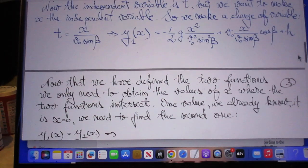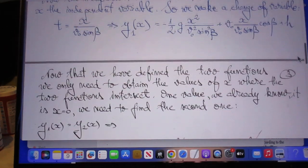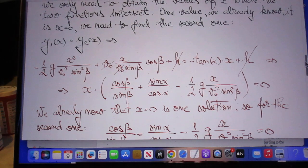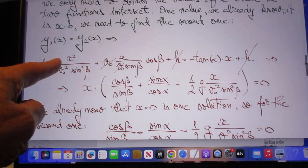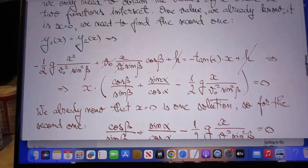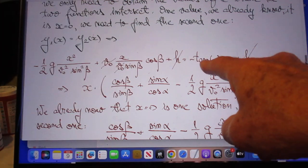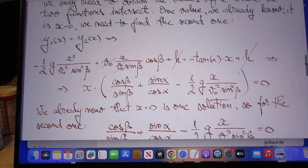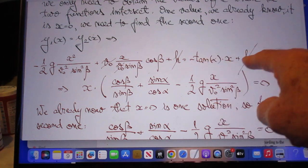When t is x divided by v_0 beta, you see here this is the left part now, and this is the right part. Now remember this is y_2. If x is zero, then y_2 is h.